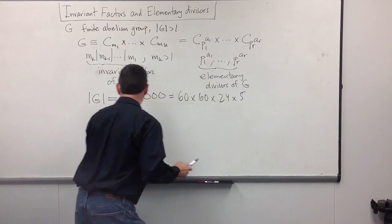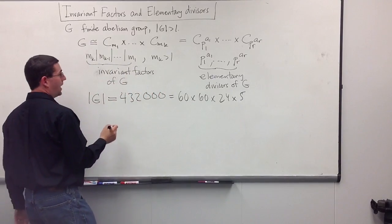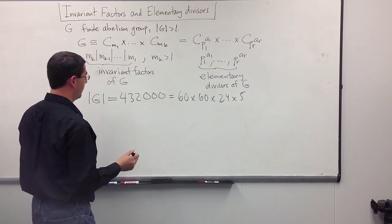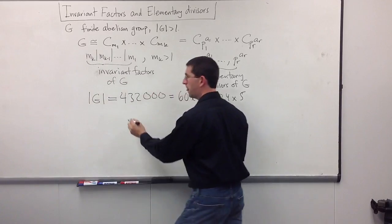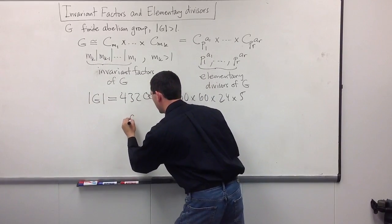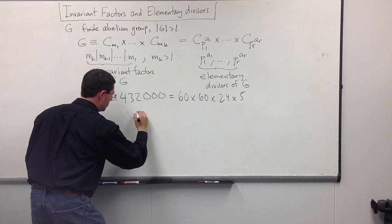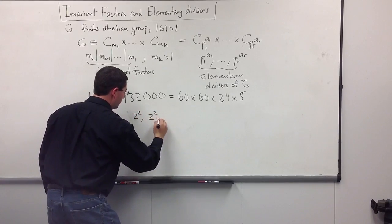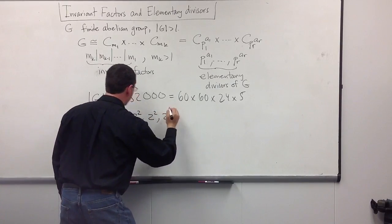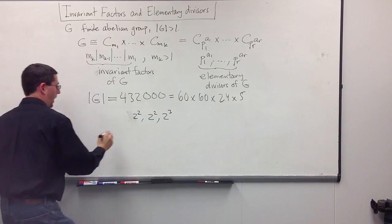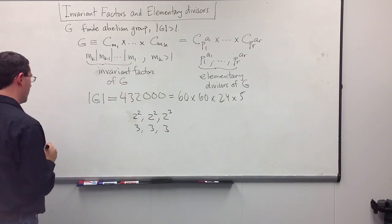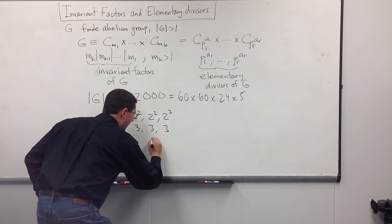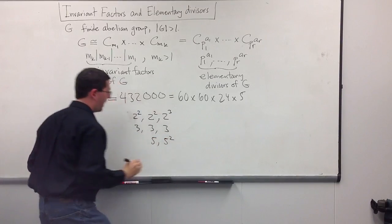Let's say I knew that my elementary divisors were going to be, let's see here. How about, let's go 2 squared, 2 squared, and 2 cubed. And, we'll go 3, 3, 3, and then we'll have 5, and 5 squared.